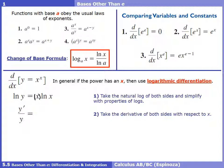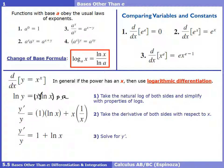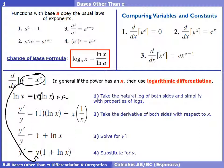The third step is to solve for y prime by multiplying both sides by y. The last step is to substitute y equals x to the x back in. So our final answer is x to the x times (1 plus ln x), and that is the derivative.